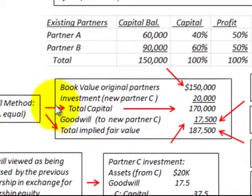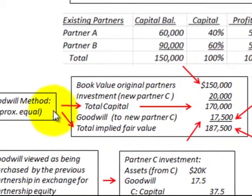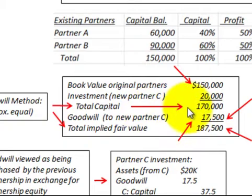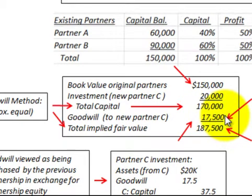When using the goodwill method, the total capital of the new partnership — $170,000 — really has to approximate the total implied fair value of the partnership. So we have a difference of $17,500 that we have to calculate.